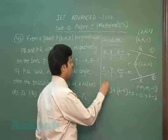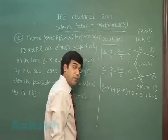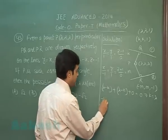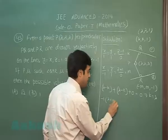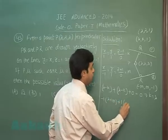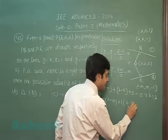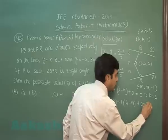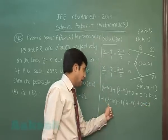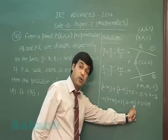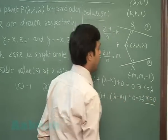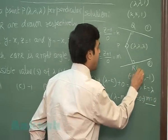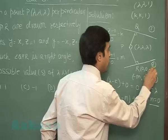Next, PR is perpendicular to line number 2 means -1 multiplied with (λ + m) plus 1 multiplied with (λ - m) plus 0 equals 0. So point R becomes (0, 0, -1).